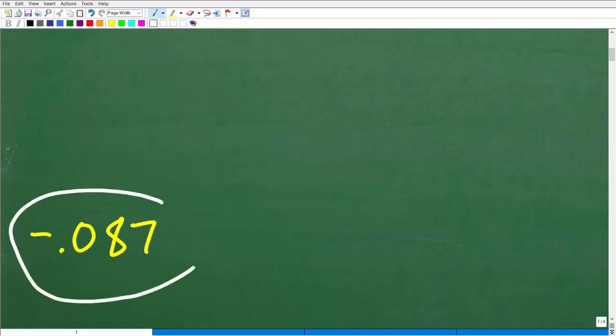Now here if you use your calculator you're going to get negative 0.087. Now you might be saying hey that's not fair you said don't use your calculator but you use your calculator. Well listen I just want to show you the actual answer.